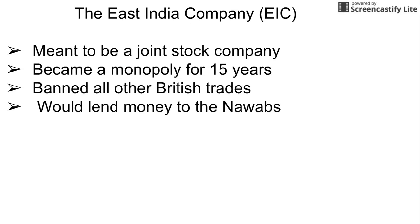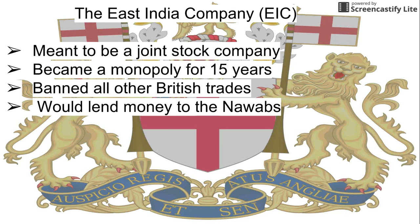The East India Company, meant to be a stock-holding company, became a monopoly for 15 years, banned all other British trades, and would lend money to the Nawabs.